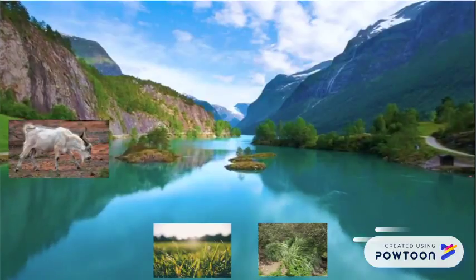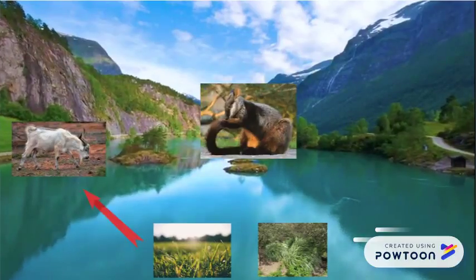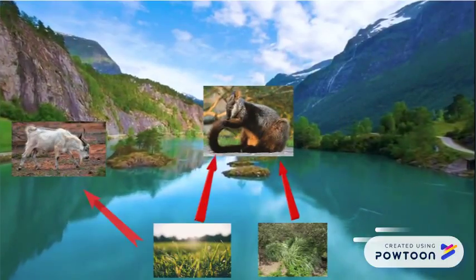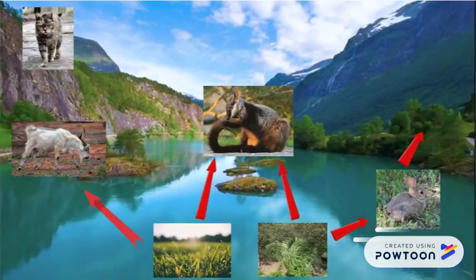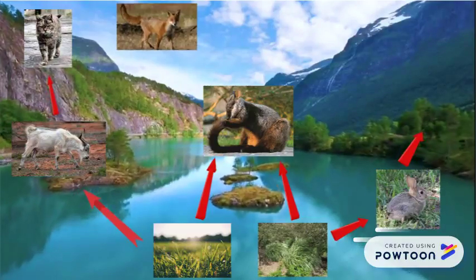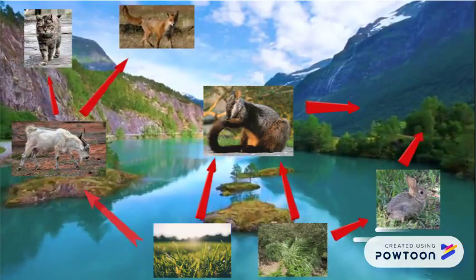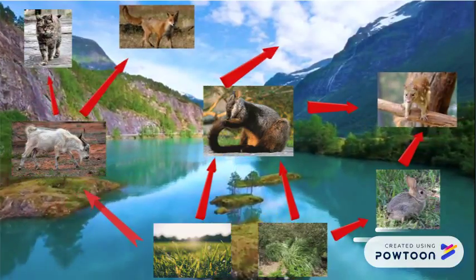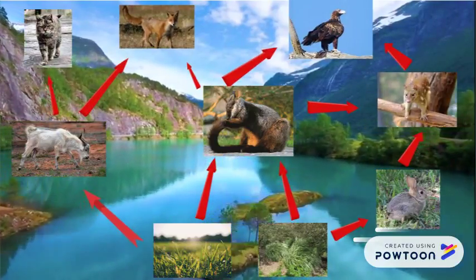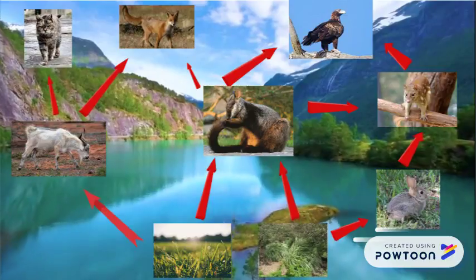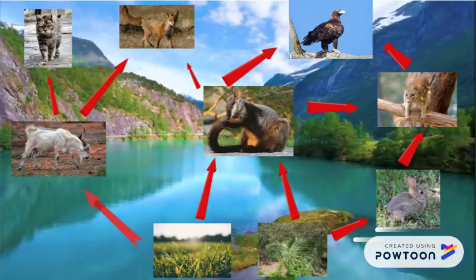The food web consists of many food chains. The food chain follows just one path as animals find food, while the food web shows many different parts of plants and animals connected.